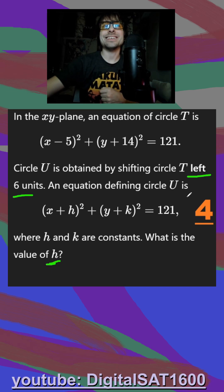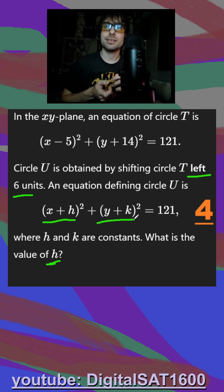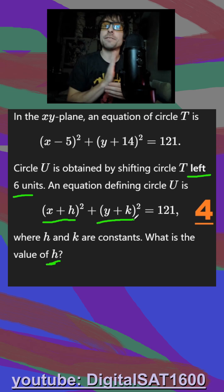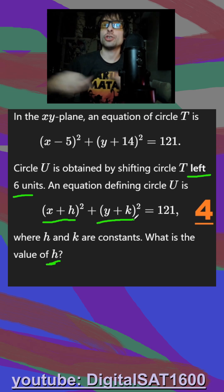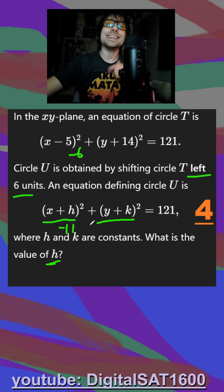A second thing is, whenever you're inside of parentheses, it's going to be the opposite of what you would think. You would think left six would be like an additional minus six. So you'd be like, okay, x minus five minus six, that means this is probably going to be minus 11. But inside parentheses is the opposite. So if they want left six, it's actually plus six.